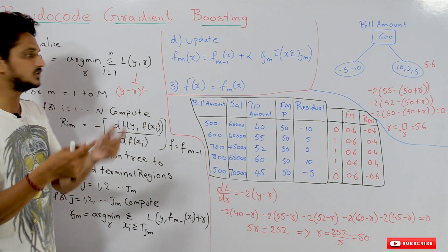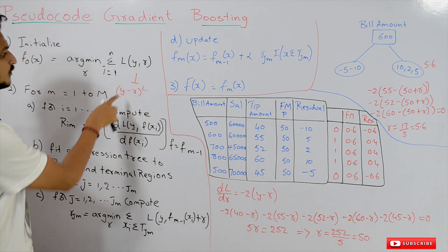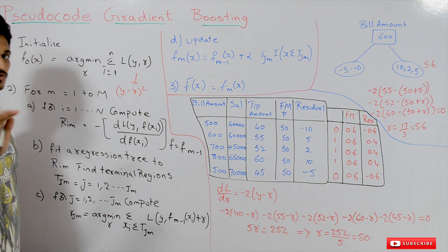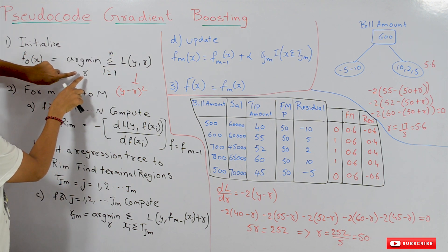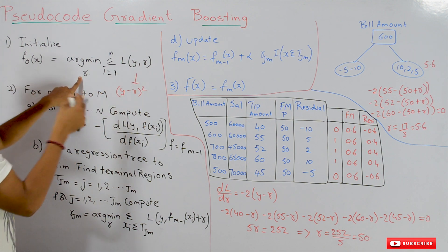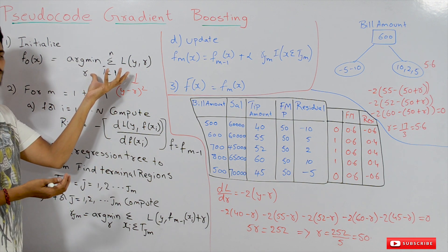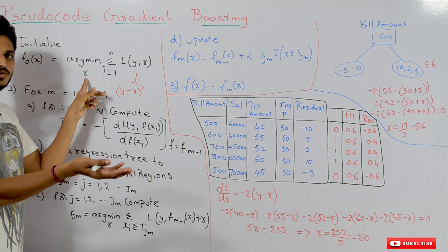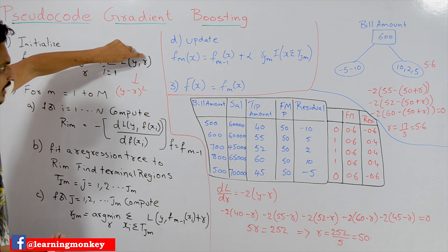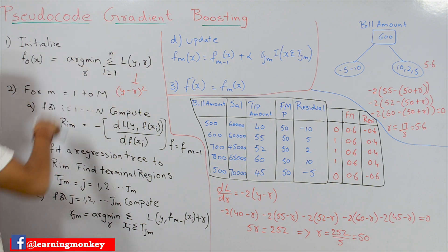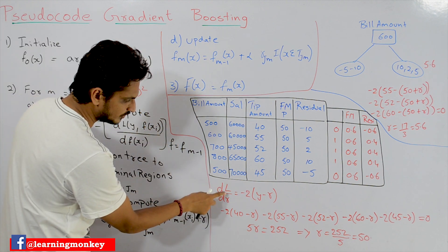Mean squared loss is (y − gamma)², where gamma is the predicted value (instead of ŷ). We compute this for all data points. The optimization problem asks: for what value of gamma is our loss minimized? To solve this, we differentiate the loss with respect to gamma and equate to zero.